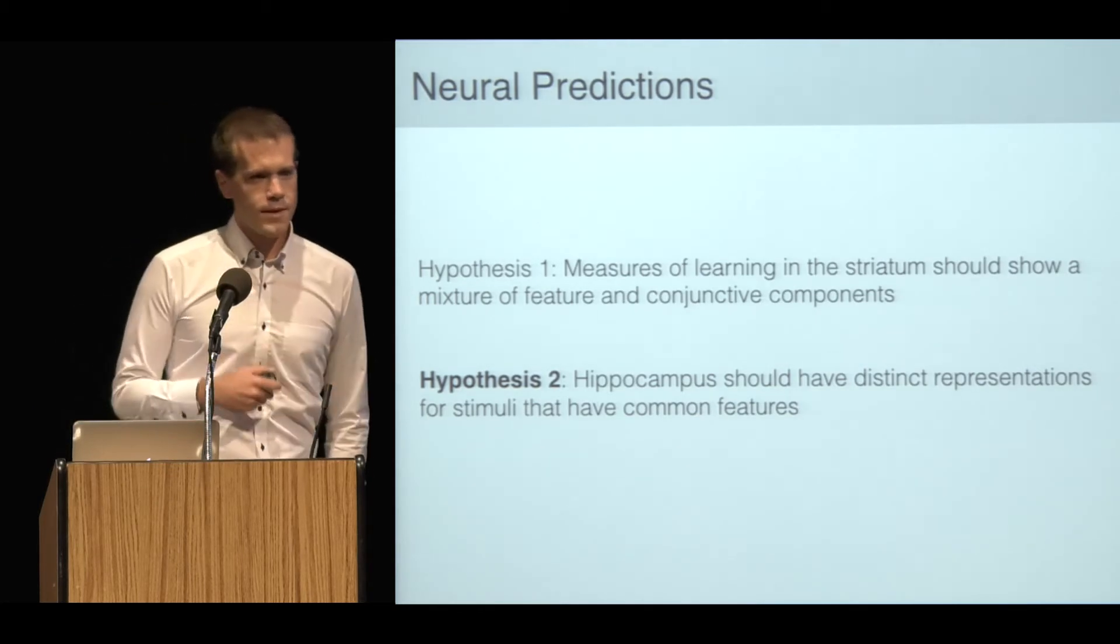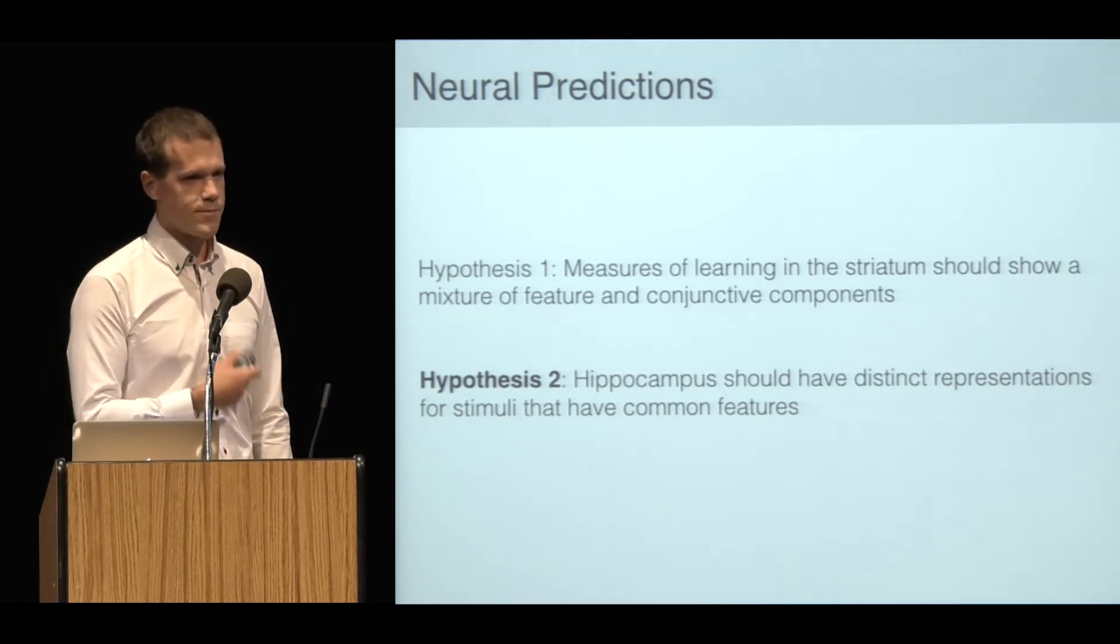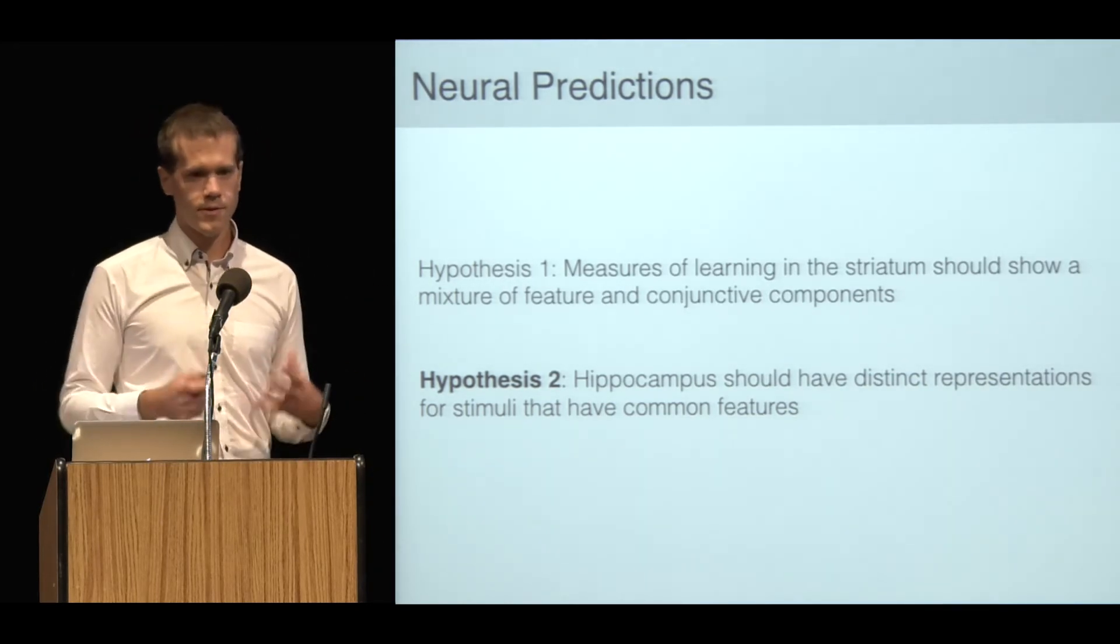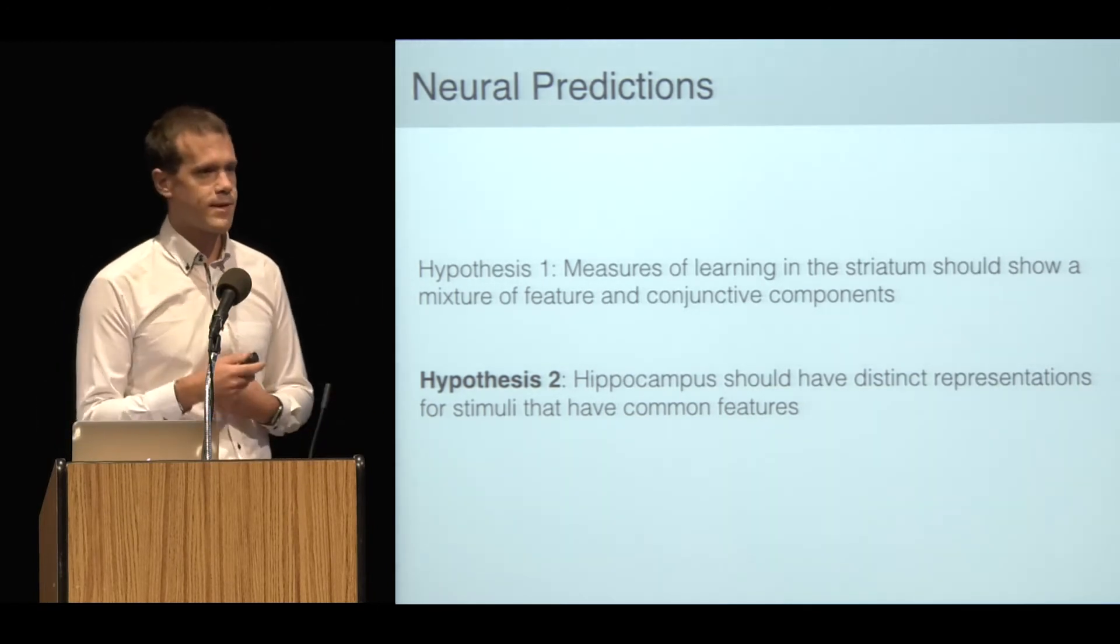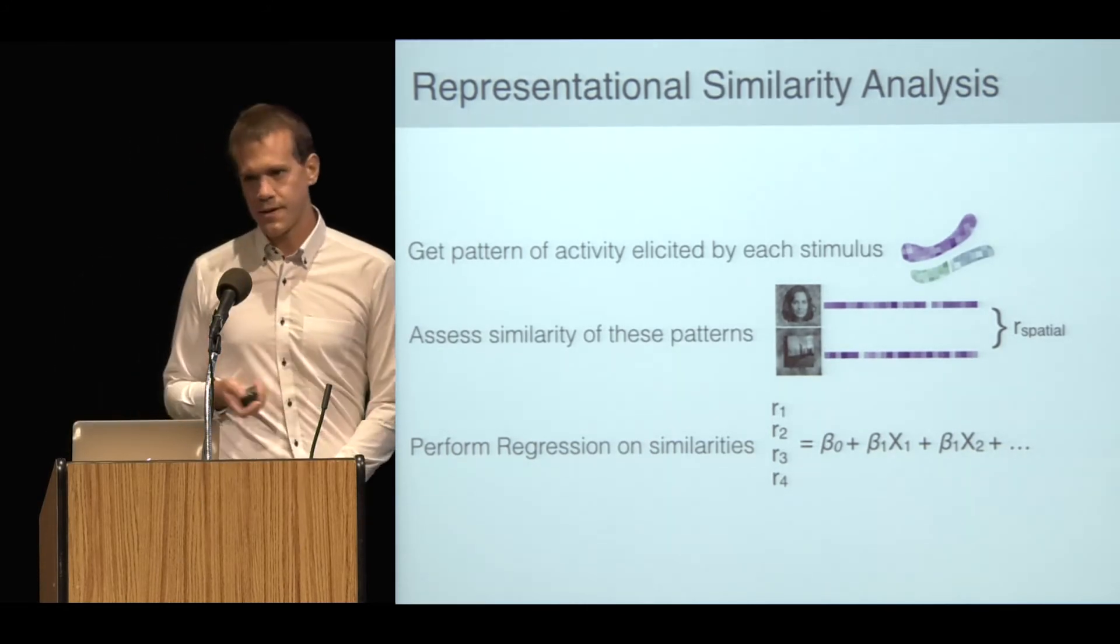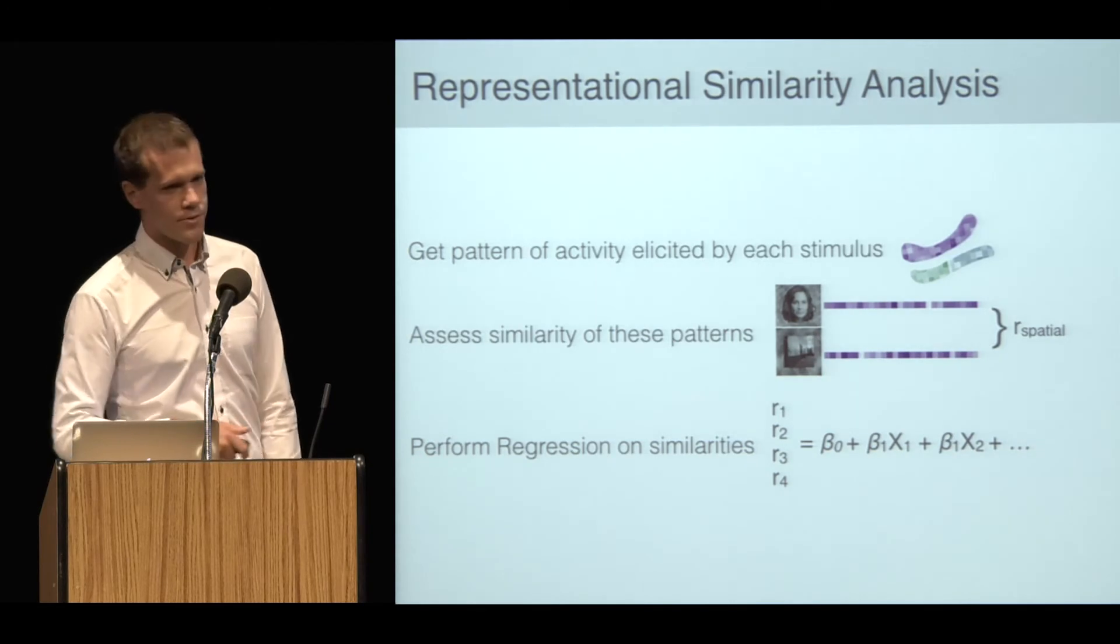The main hypothesis here is about the role of the hippocampus and its representational properties. The idea is it's keeping conjunctive representations separate for stimuli that have overlapping features. I want to see if I can find evidence for that. I'm going to use a representational similarity analysis approach, so I'll just go through quickly.